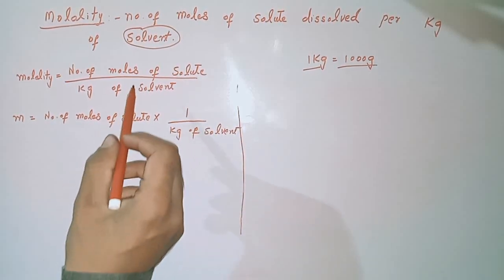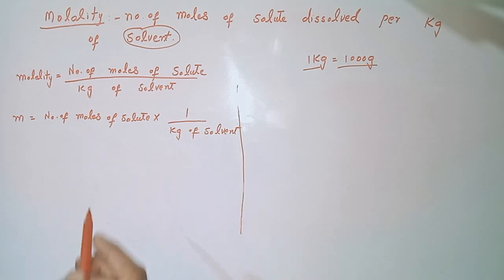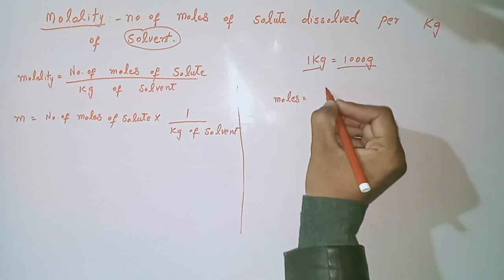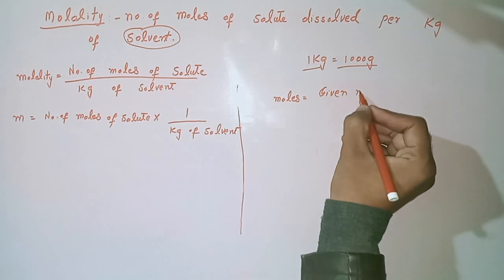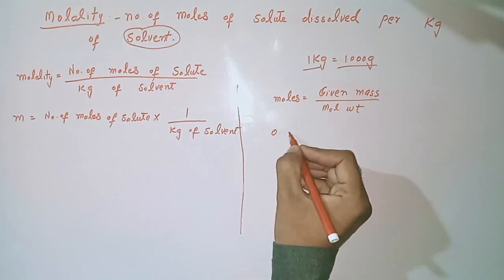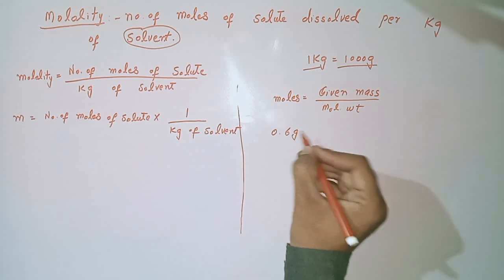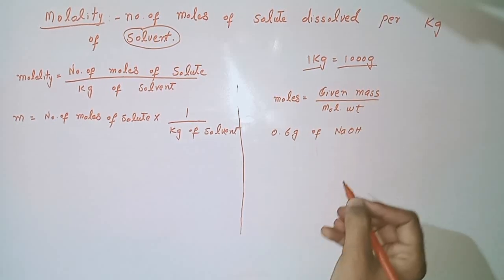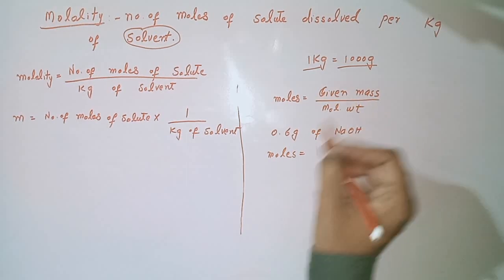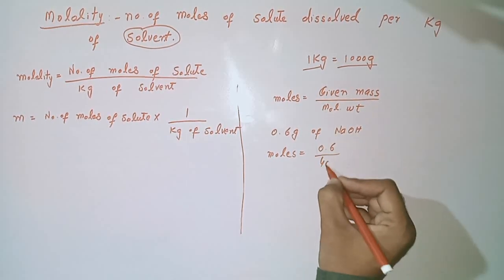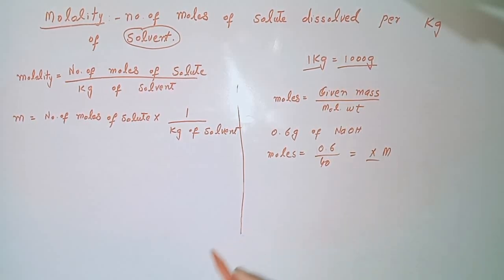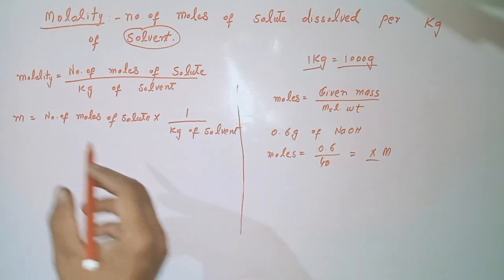We can write the upper formula in another form. What are moles? Moles equals given mass divided by molecular weight. For example, if you are given 0.6 grams of H, calculate its moles: moles equals 0.6 divided by the molecular weight of sodium hydroxide, which is 40. That gives the answer in moles. Then: number of moles of solute multiplied by one over kg of solvent.